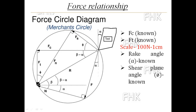The next step uses the known shear plane angle phi. From the cutting point, measure angle phi and draw the line representing Fs, the shear force. Where this line intersects the Merchant Circle, mark that point. From that point, draw a perpendicular line — this will be Fn. Where Fn intersects the circle gives the magnitude of Fn. In this way, the magnitudes of Fs and Fn are found from the circle, with R as the resultant of Fs and Fn, again forming a right angle triangle.